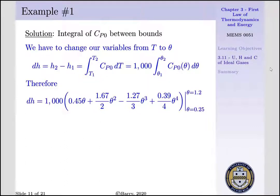Now note C0, C1, C2, and C3 have values of 0.45, 1.67, minus 1.27, and 0.39 respectively. Our change of enthalpy is equal to 1054.6 kJ per kg.